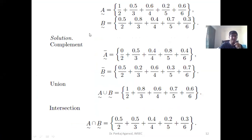Suppose I have two fuzzy sets, A and B. These are the elements of the fuzzy sets — suppose elements 2, 3, 4, and so on. Associated with each and every element is the degree of membership. The values represented at the numerator are the fuzzy values, or the degree of membership.